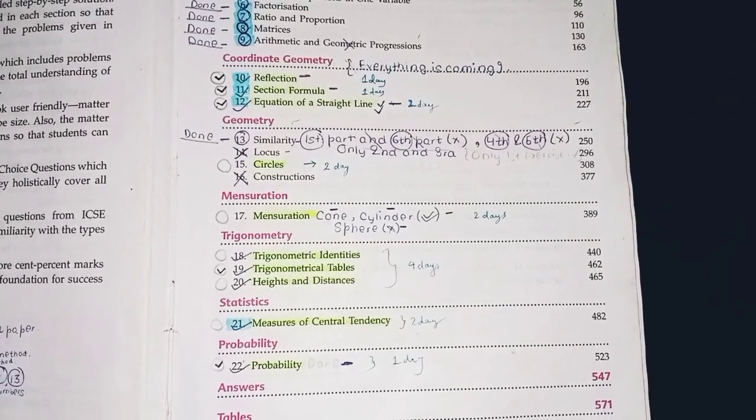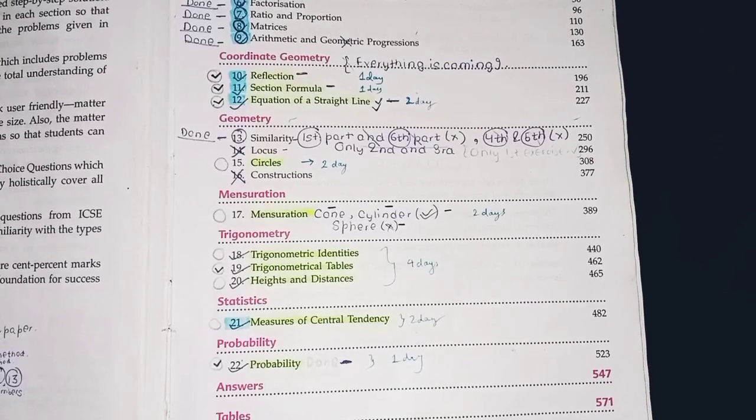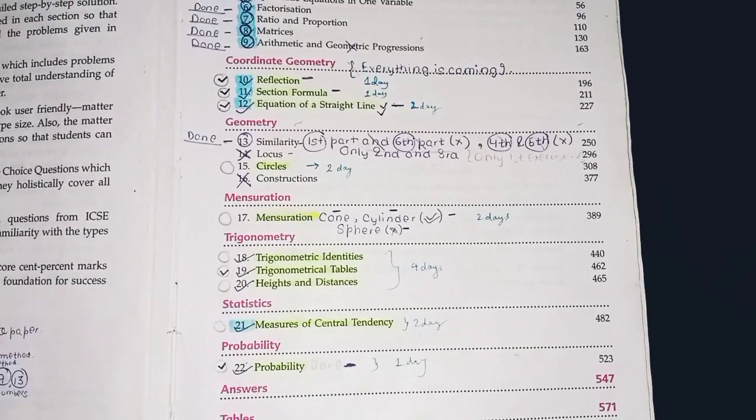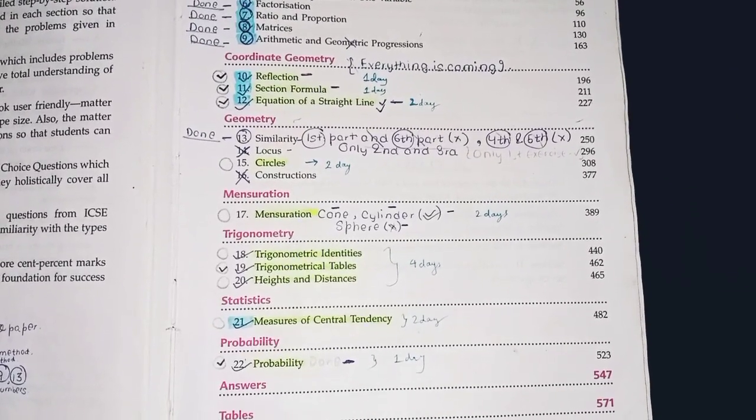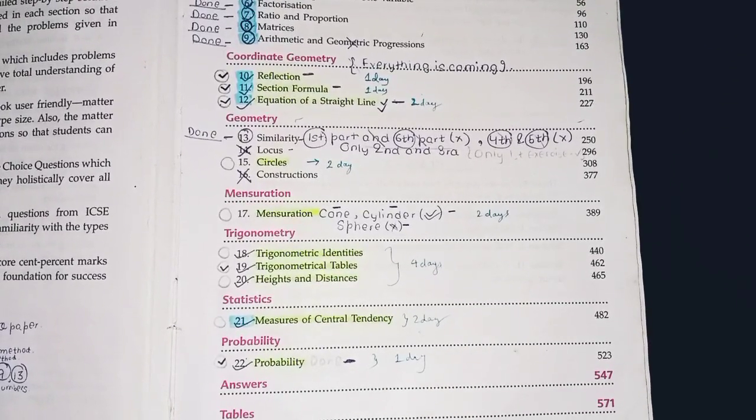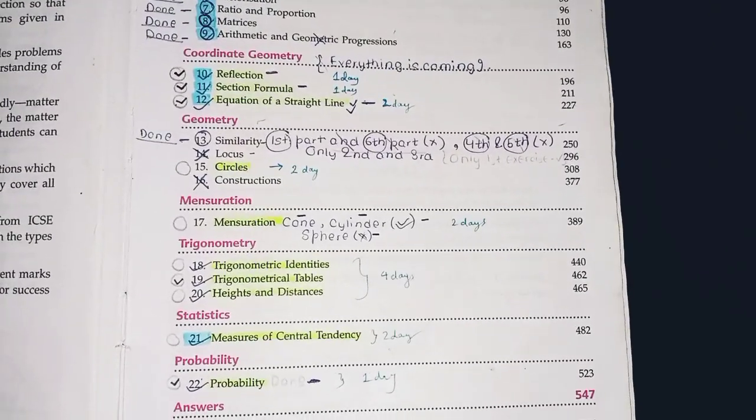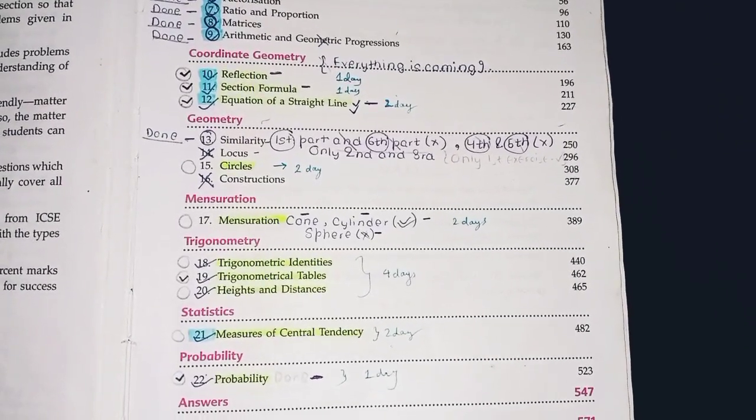In this video, I'm going to tell you how you can score 40 on 40 in your semester 2 examination and how to complete the whole syllabus in 15 days. Sounds impossible, but if you try to plan and execute the plan every day, then you can surely complete the mathematics syllabus in 15 days.